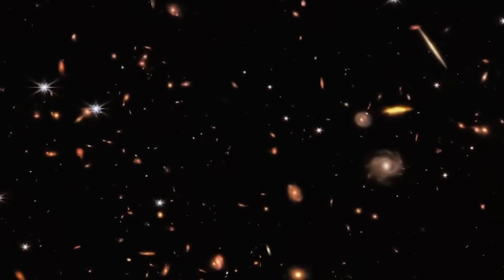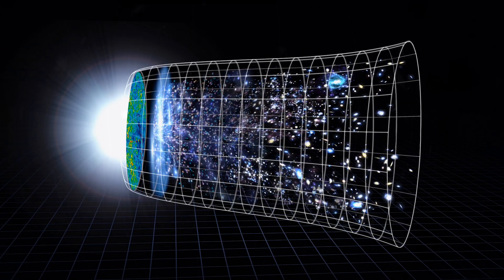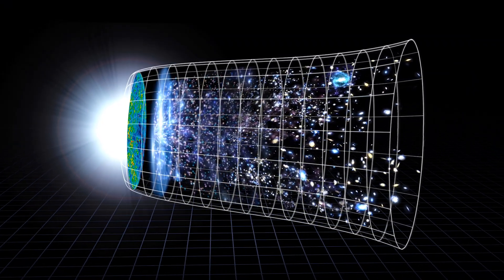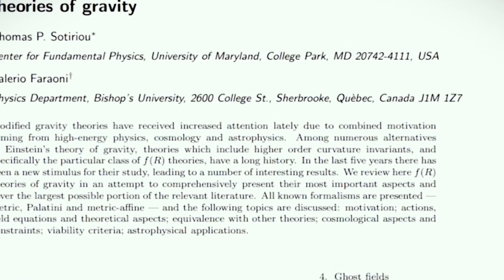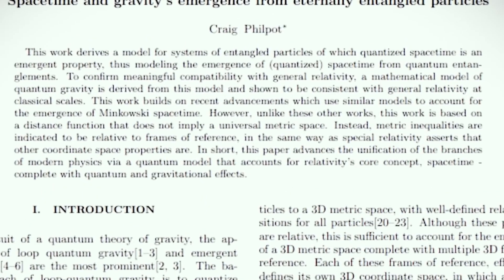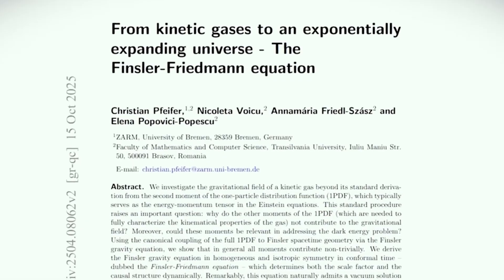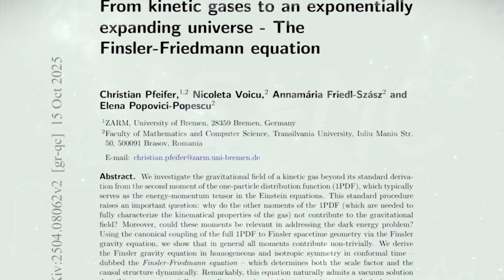That's where Finsler geometry steps in like 'relax, I've got this.' It bakes cosmic acceleration right into space-time itself. No extra ingredients, no hidden energy - just pure geometric swagger. This approach fits a growing trend in theoretical physics: trying to solve cosmic puzzles by tweaking the structure of space-time rather than inventing invisible magic.